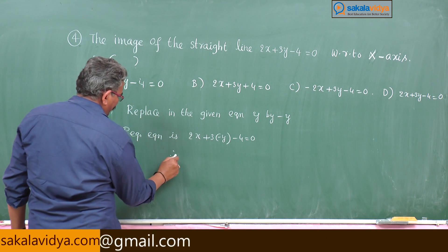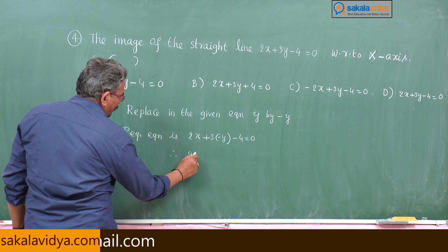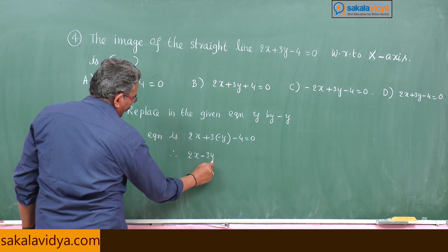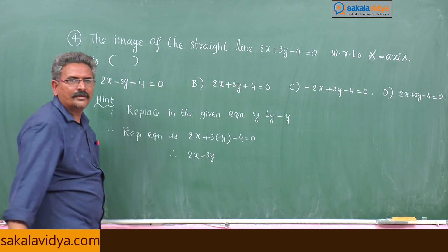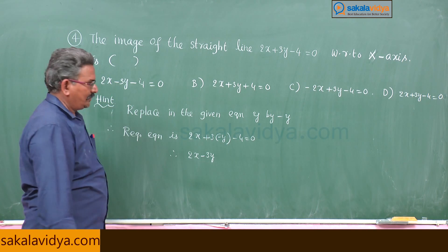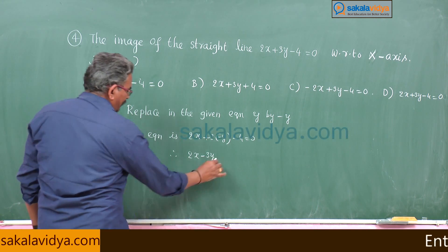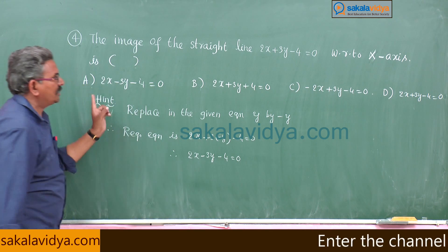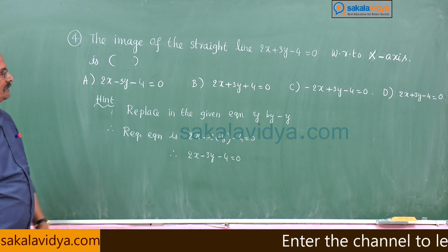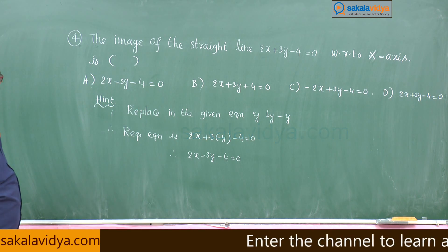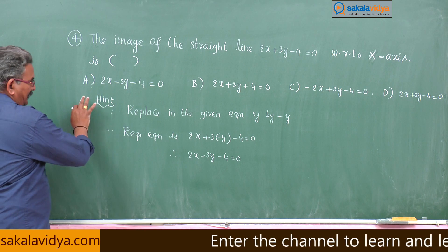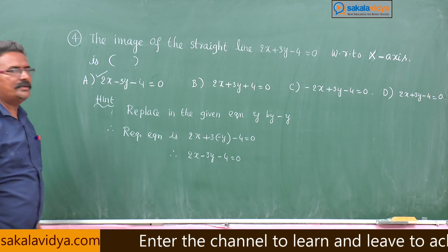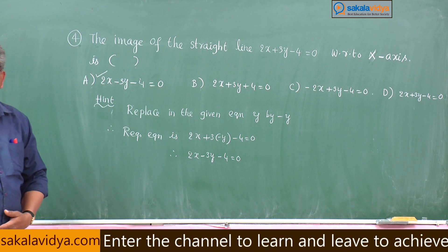Therefore, 2x - 3y - 4 = 0. Option A is the right option.